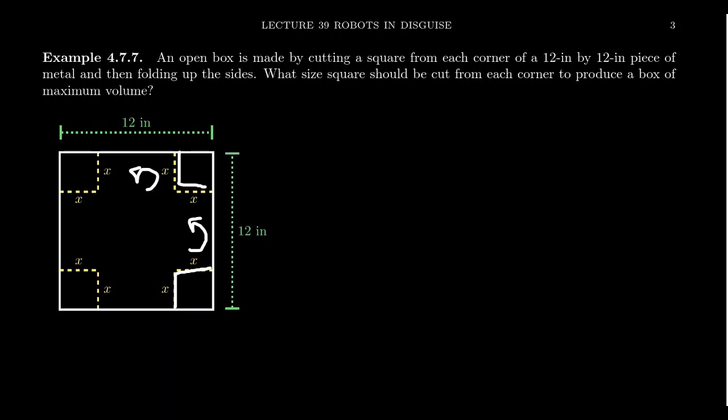And make a box like so. So we're going to make an open box by cutting a square from each corner of a 12 inch by 12 inch piece of metal and then folding up the sides. What size square should we cut off for each corner to produce a box of maximum volume? So let's focus on that for a moment. We want to maximize volume.